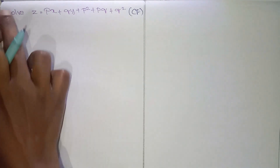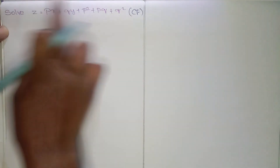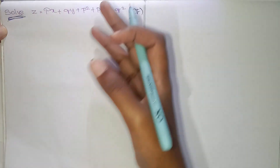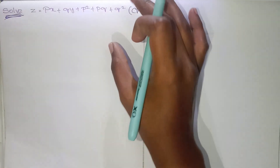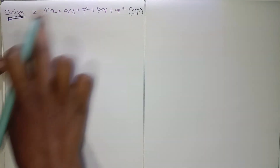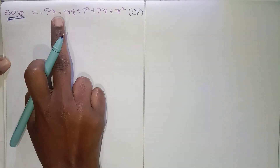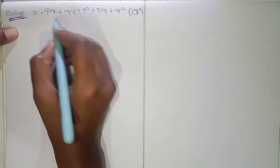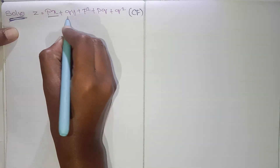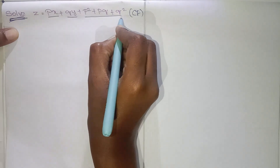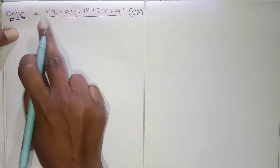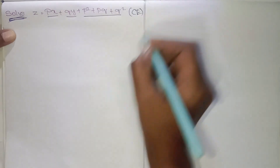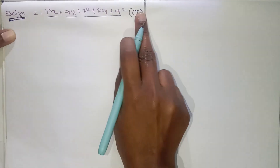We need to identify it — this is an indirect question. Solve-type questions are known as indirect questions; they don't mention any type, so we need to identify which form it belongs to. For that, we know it has Px, Qy, and this equation is in the form of Clairaut's equation.